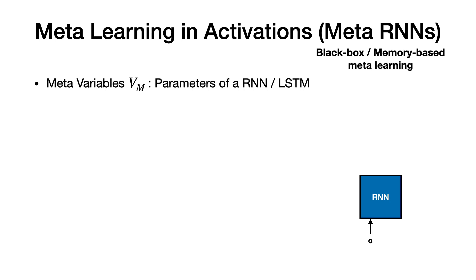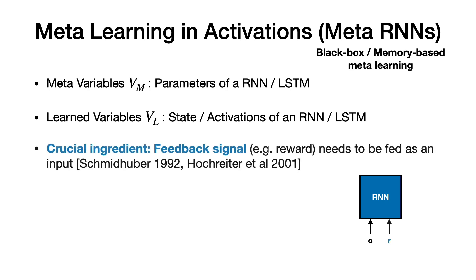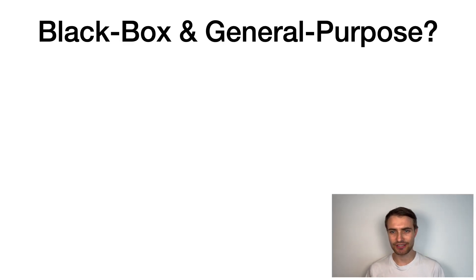We refer to those as the meta-variables. The learned variables are the state and activations of this RNN, storing information about what has been learned. And the crucial ingredient here is to add a feedback signal, say the label in supervised learning or the reward in RL to the LSTM inputs. This allows for learning to happen based on that feedback signal, purely in the activations.